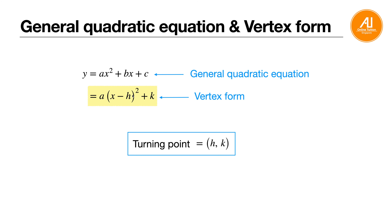The vertex form is: a open bracket x minus h, bracket squared plus k. This form is called vertex form because from it you can figure out what is your turning point. When you see negative h, you just take out h. And if here is plus k, you just take out k. So from this equation form, you can figure out what is your vertex, or in other words, your turning point. Always remember this form.